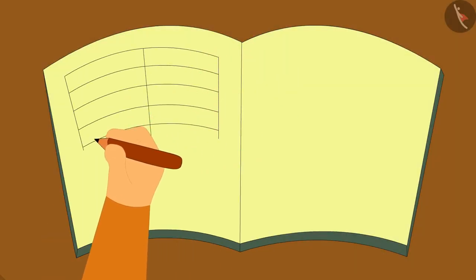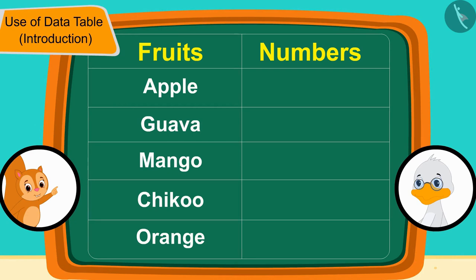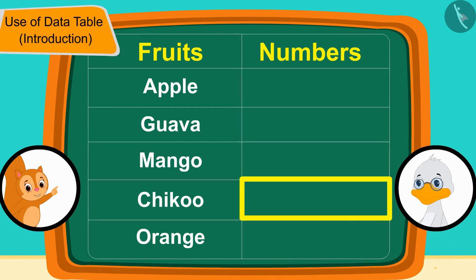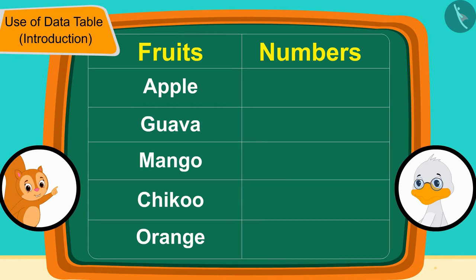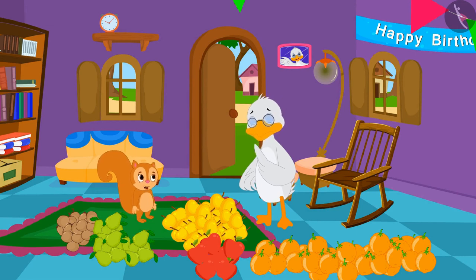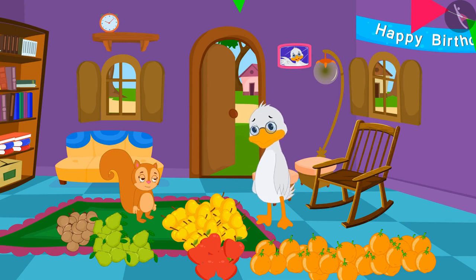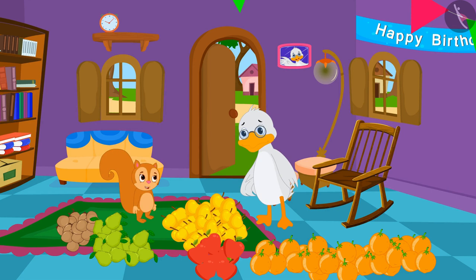Chanda told uncle, 'Don't be sad — I have another solution for this.' Chanda quickly made a table on paper and explained: 'Uncle, we can use this table to write down the number of fruits so that we don't forget them when we finish counting. Here I have written the names of all the fruits. As we finish counting each fruit, we will write the total number in front of its name. In this way, when we finish counting all the fruits, all the numbers will have been recorded.'